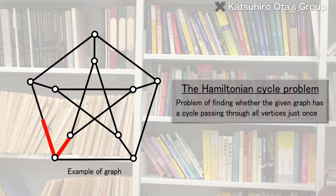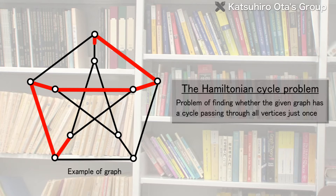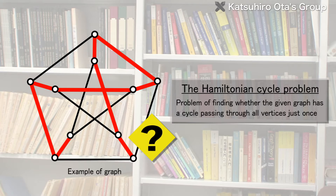The problem of determining whether a given graph has a Hamiltonian cycle is algorithmically very hard, and the necessary and sufficient conditions are still not known theoretically. Even now, research on Hamiltonian cycles and related structural problems is very vigorous.